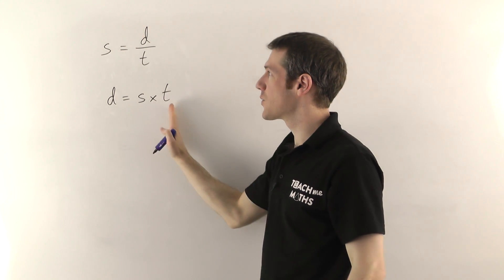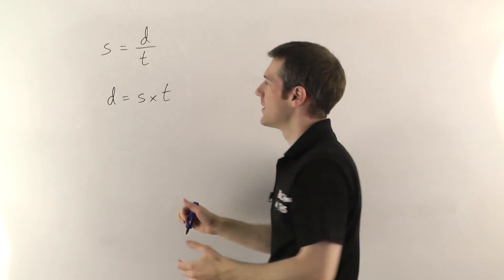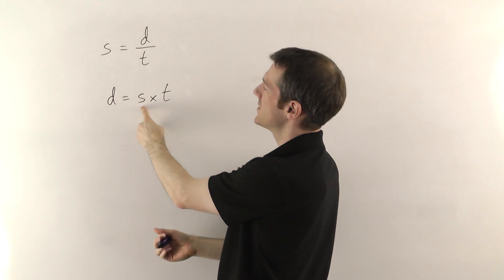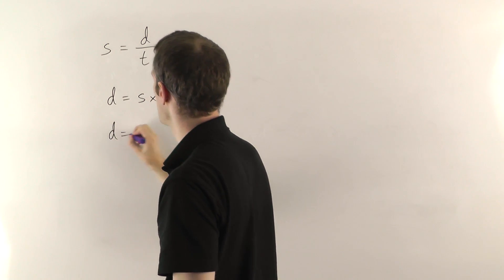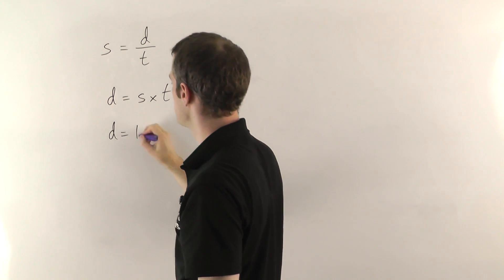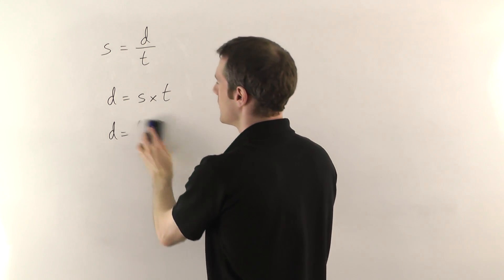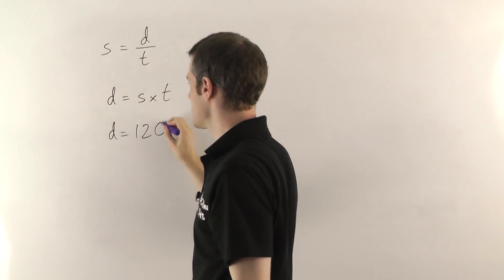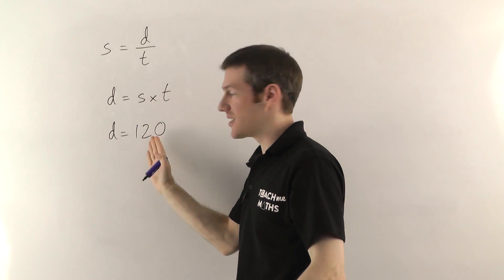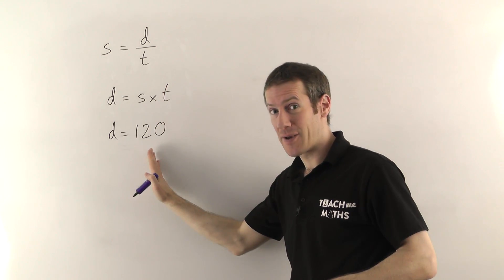So I've rearranged the equation to get the distance by itself. Now when I do my experiment if the speed was 60 miles an hour and the time was 2 hours I can just do 60 times 2 is 120. If the speed was 30 and the time was 4, 30 times 4 is 120 and I can just keep shoving the numbers in each time without having to go through the solving the equation bit each time. So it saves a lot of time.